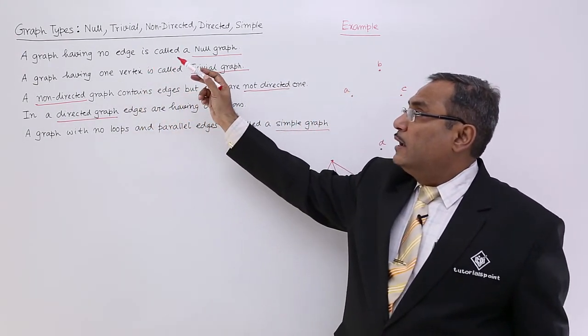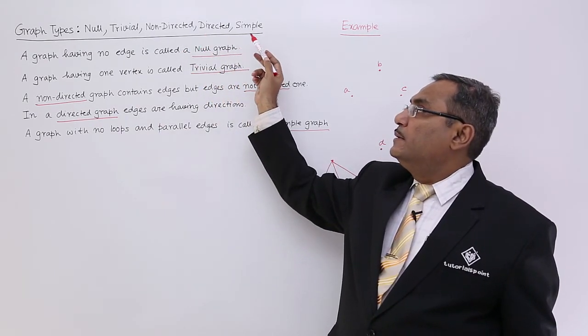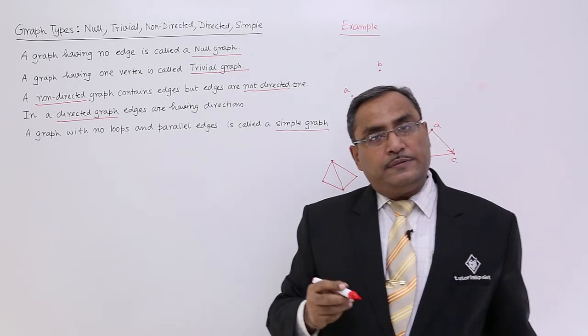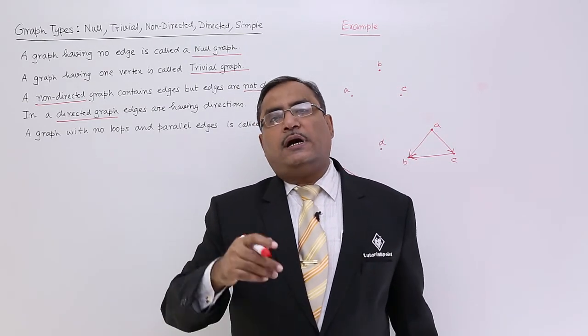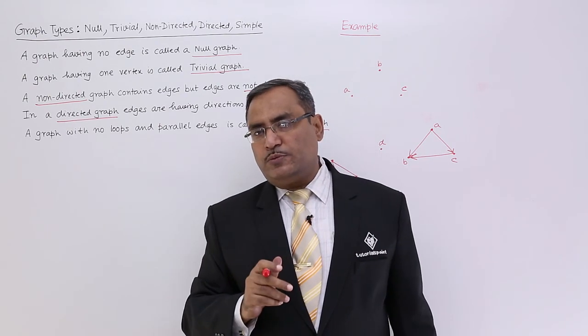In this way, null, trivial, non-directed, directed, and simple are the different graph types. In the next video, we shall discuss other graph types. Please watch that video, as it will be a continuation of this one. Thanks for watching.